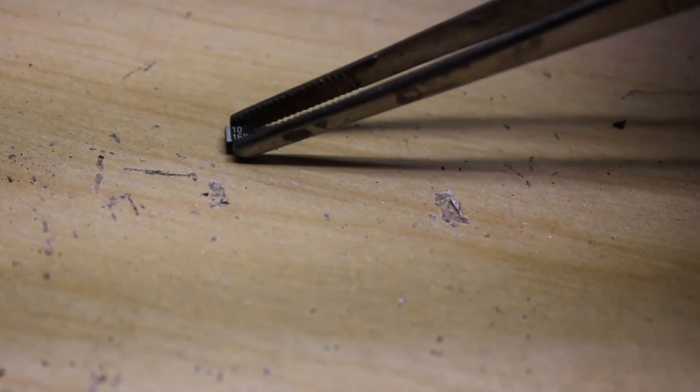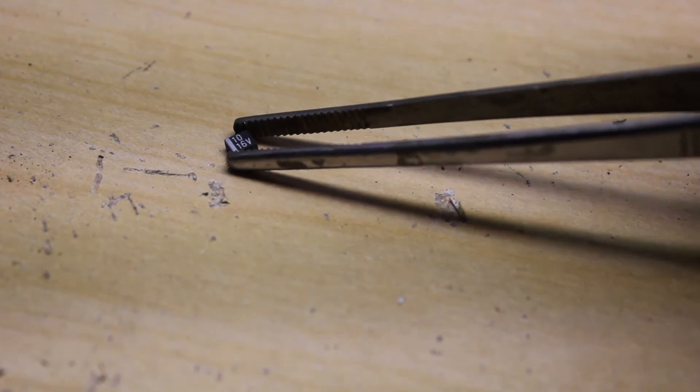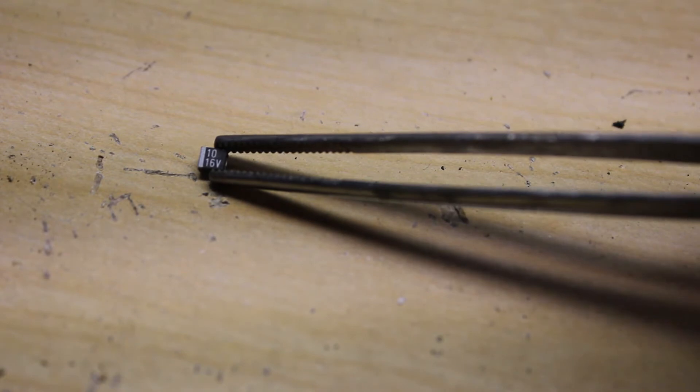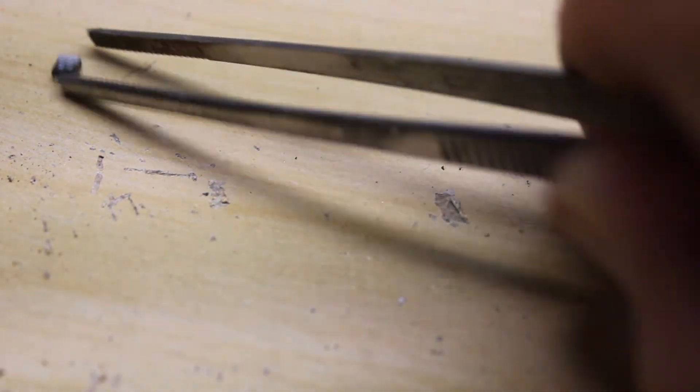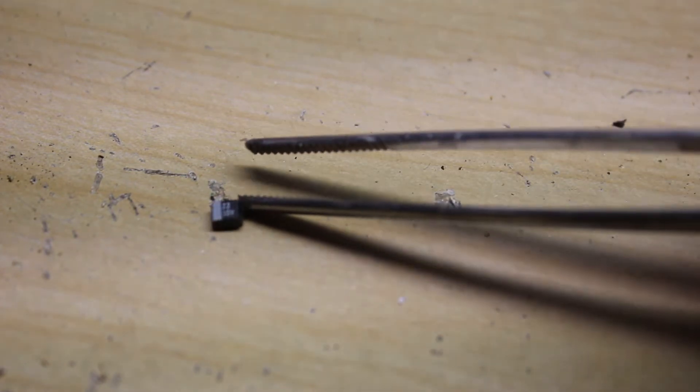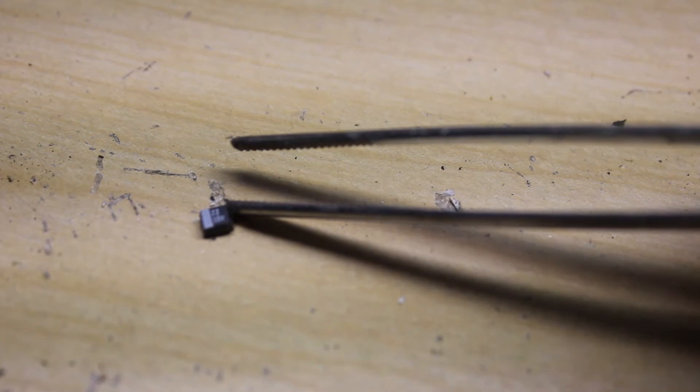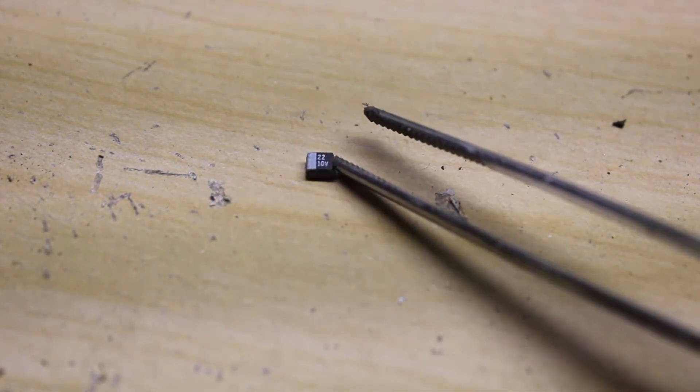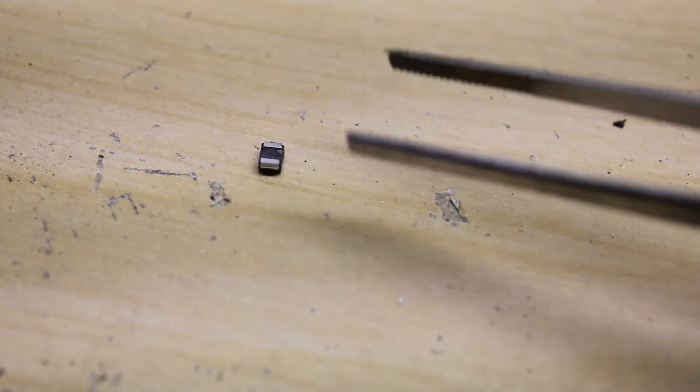Like this one here has a 10 and then 16 volts. This one here is a tantalum. See, this one's kind of the same, this one's 22 and I can't see, 10 volt. I've been doing some research on these black capacitors.